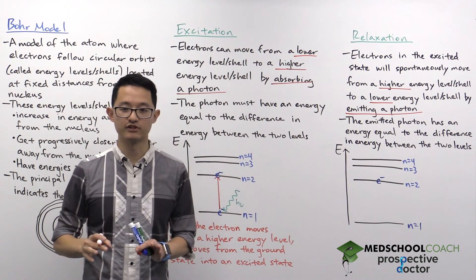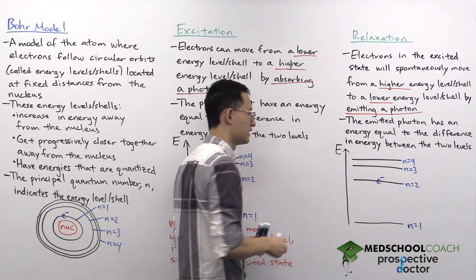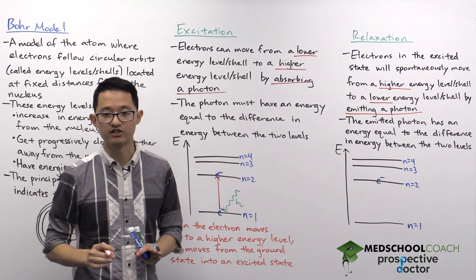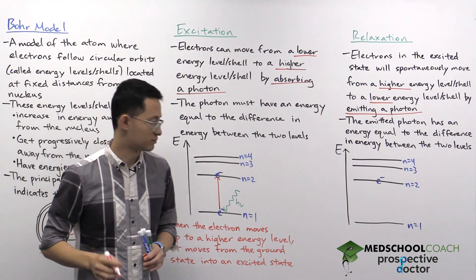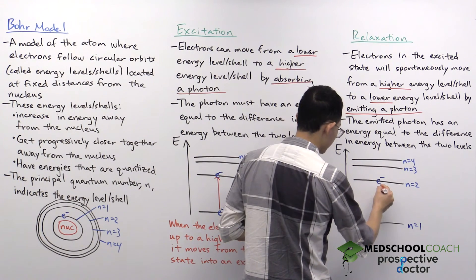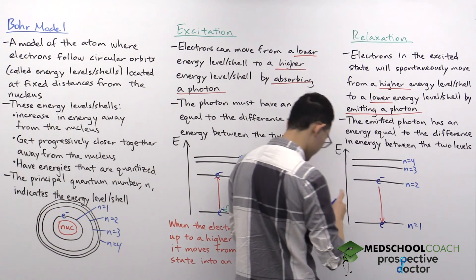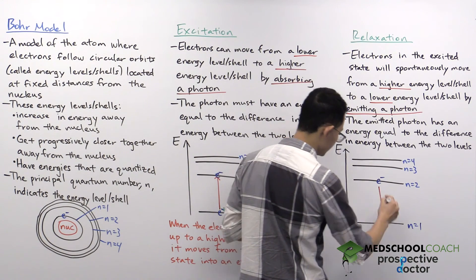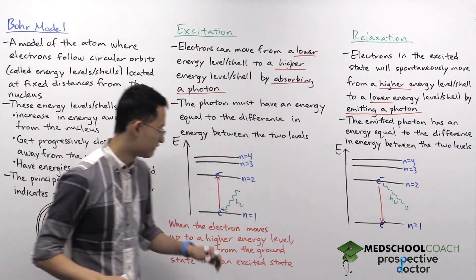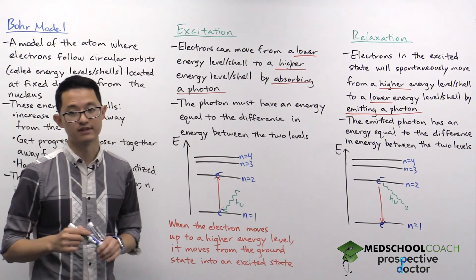So in many ways, it's really just the opposite of excitation. And again, when you relax and emit the photon, the photon that you emit is going to have an energy equal to the exact difference in energies between the two shells that you just moved from. So that means in this case, our electron's in the second shell, it can go ahead and relax and move down to the first shell. And in doing so, a photon is going to be emitted and the energy of that photon is going to be the same exact energy as the photon that we used in the first place to move from that first level to the second level.